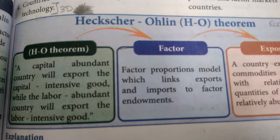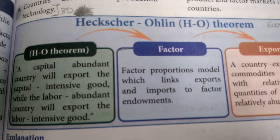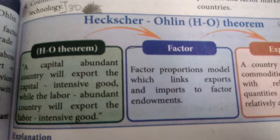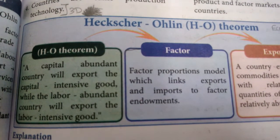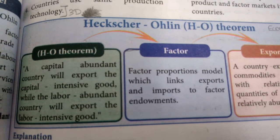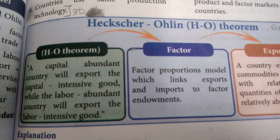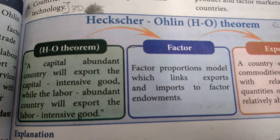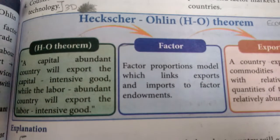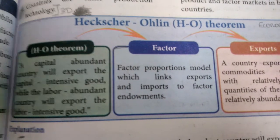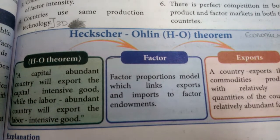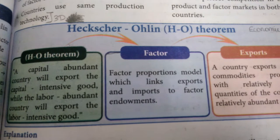According to the Heckscher-Ohlin theorem, a capital-abundant country will export capital-intensive goods while a labor-abundant country will export labor-intensive goods. Whichever country has more factor endowment abundantly, that nation will export accordingly. For example, India has more labor-intensive goods because India is an agricultural country. By using more labor, India produces more crops, so India can easily export crops — rice, paddy, and food items.